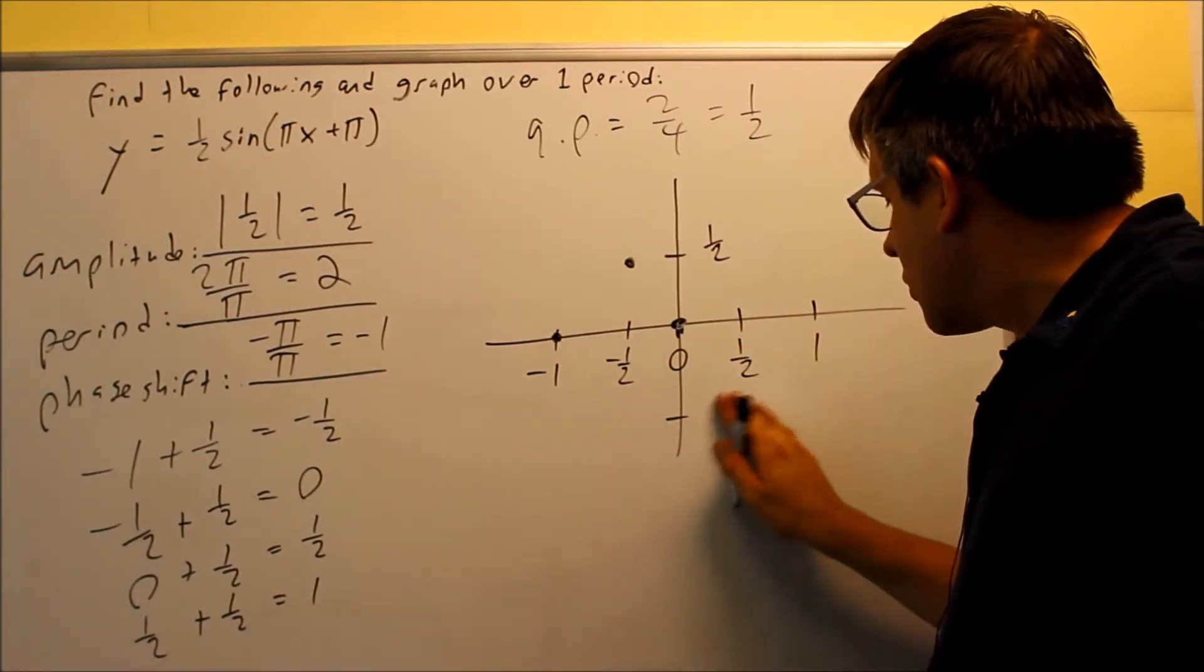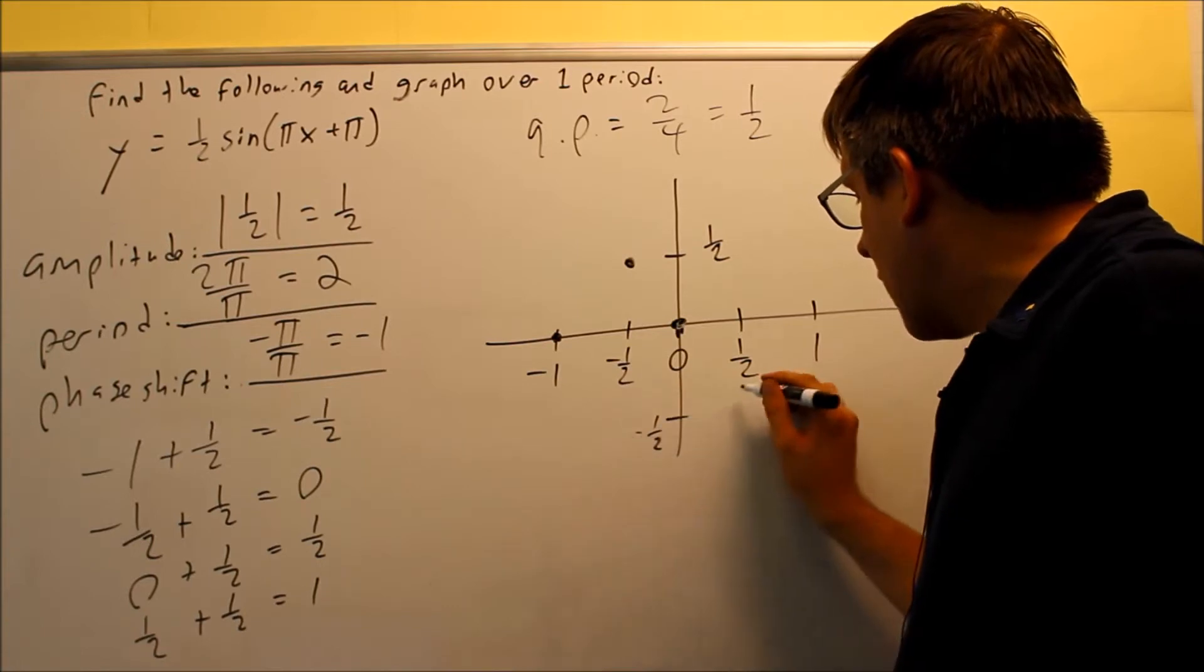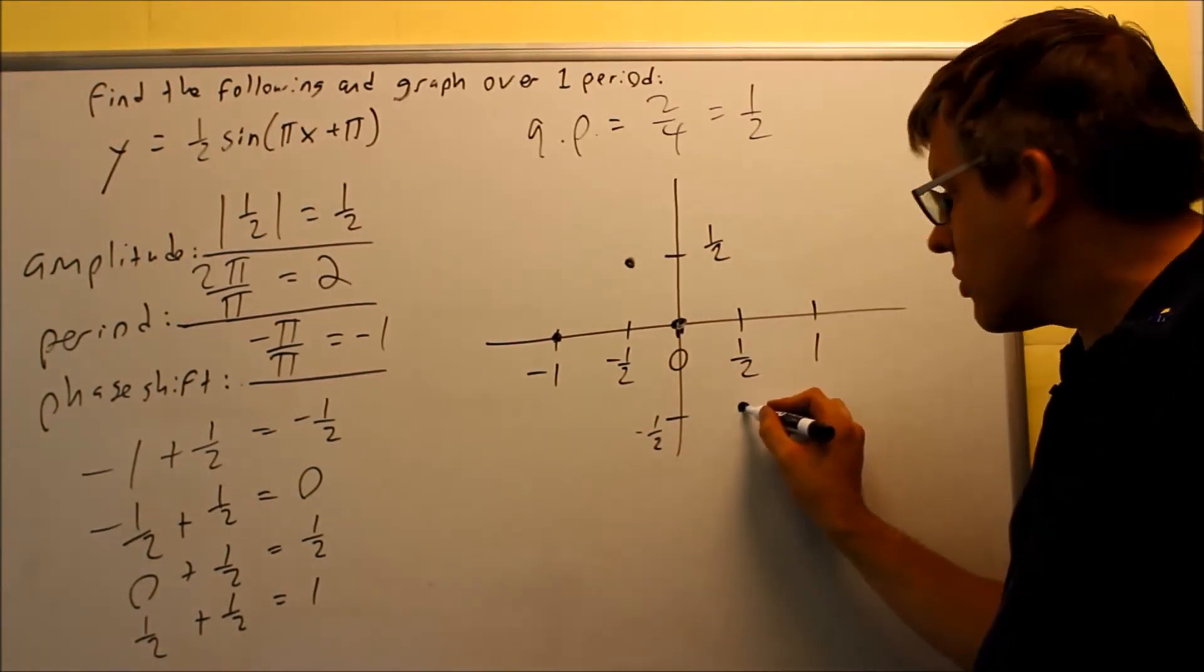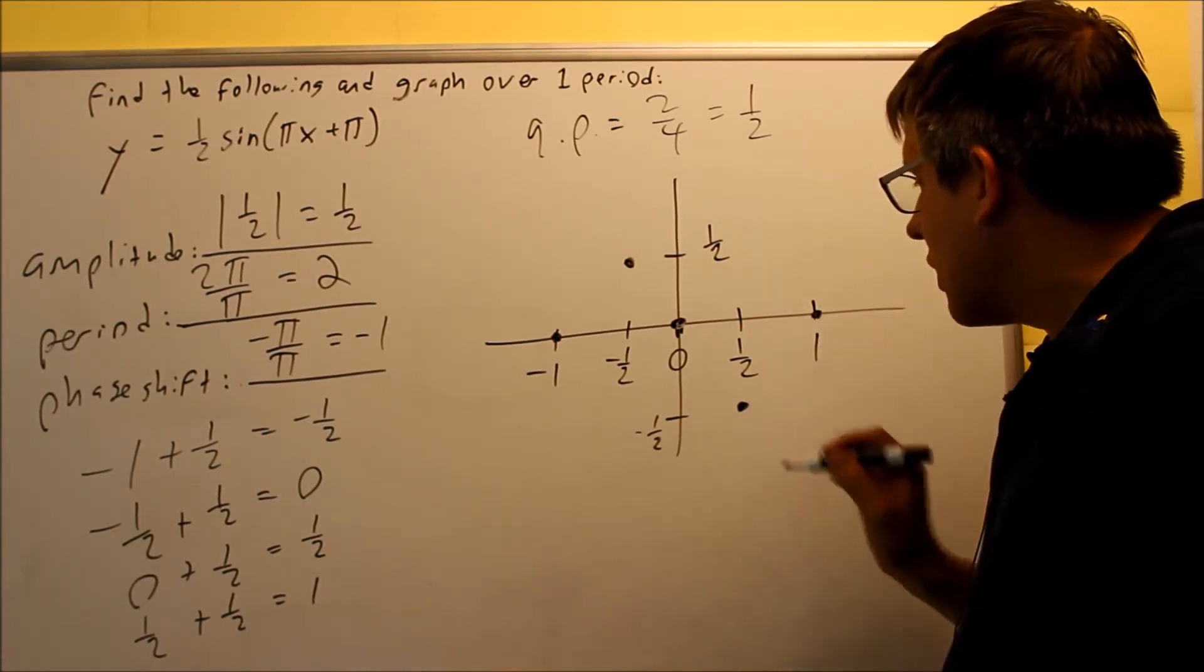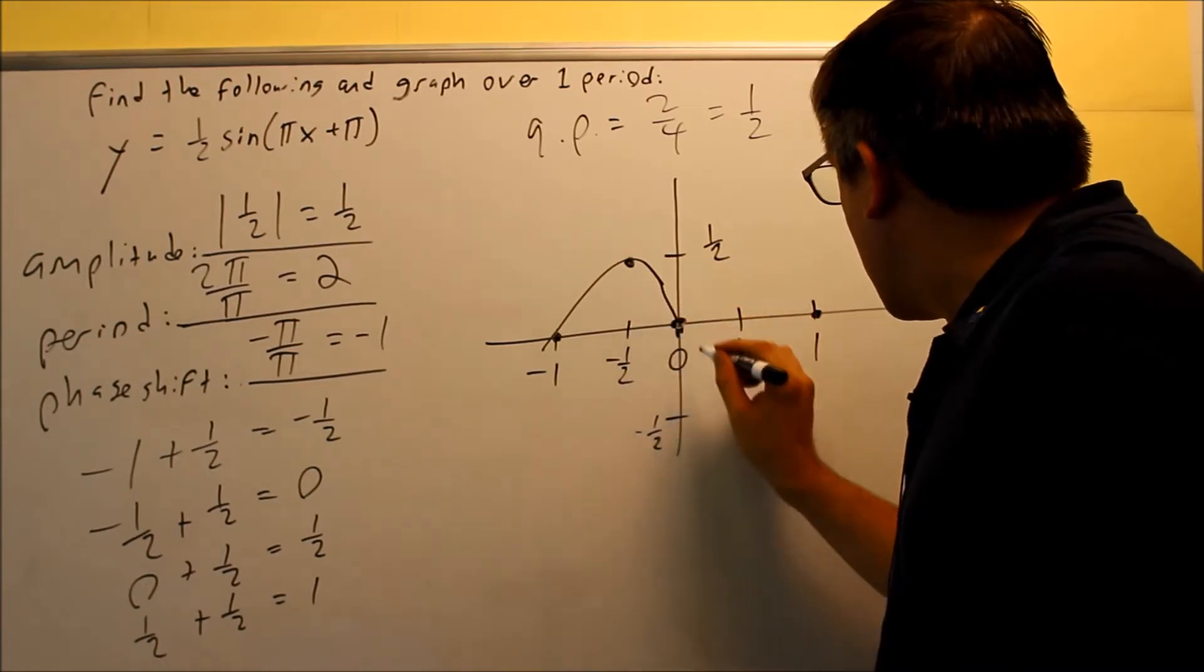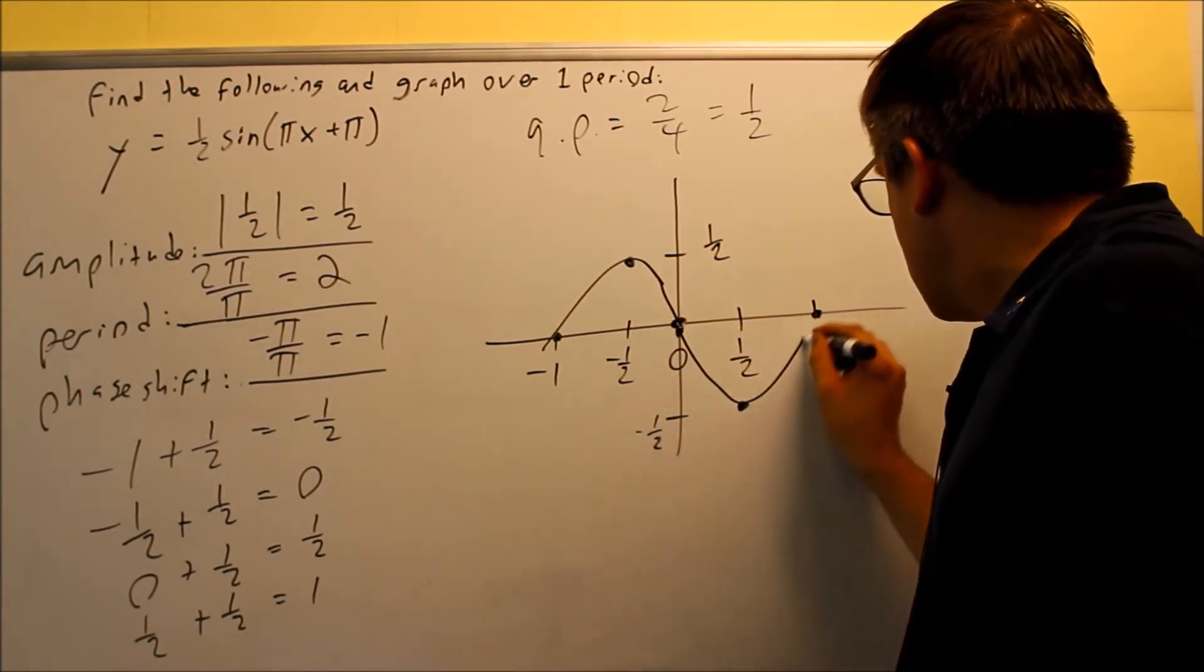it'll go down to the amplitude again. So right here, it's going to actually be at this point, so that negative 1/2, and 1/2 there, that's where it is, then it goes back up to the x axis again. So the graph is going to go down and look like this.